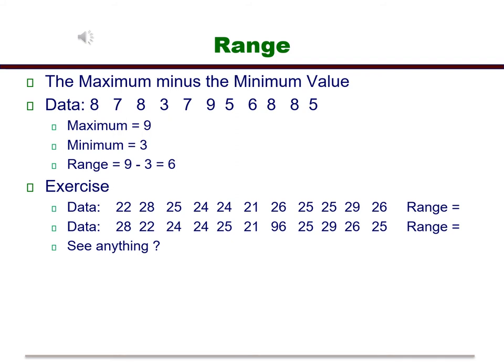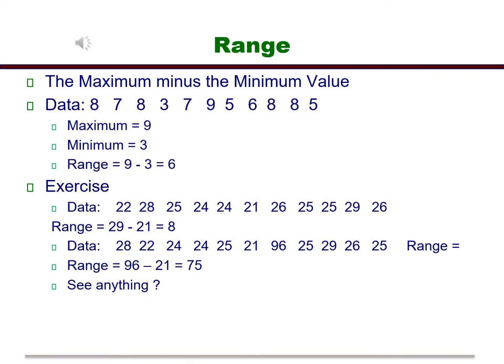Give it a try for these other data sets. Do you notice anything about the range as a measure of variability? You should have gotten the answers to be 29 minus 21 equals 8, and 96 minus 21 equals 75. What do you notice here? When we changed one number from the first sample to the second, the range blew up. This shows that the range is really only representative of the data when the sample size is small.